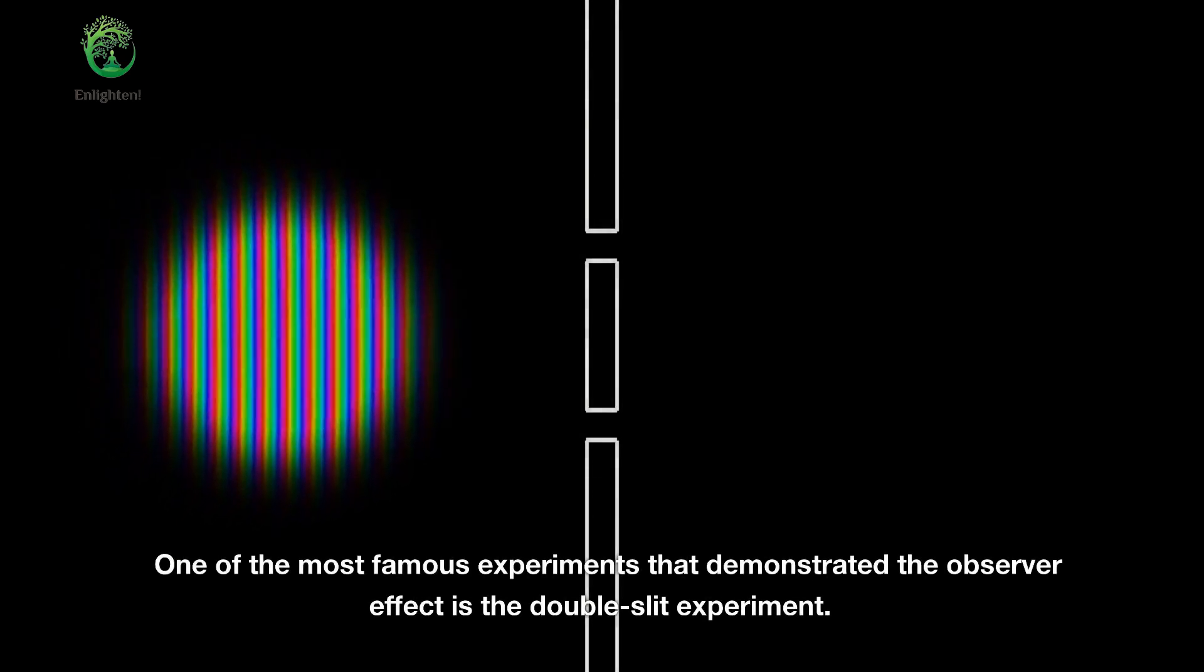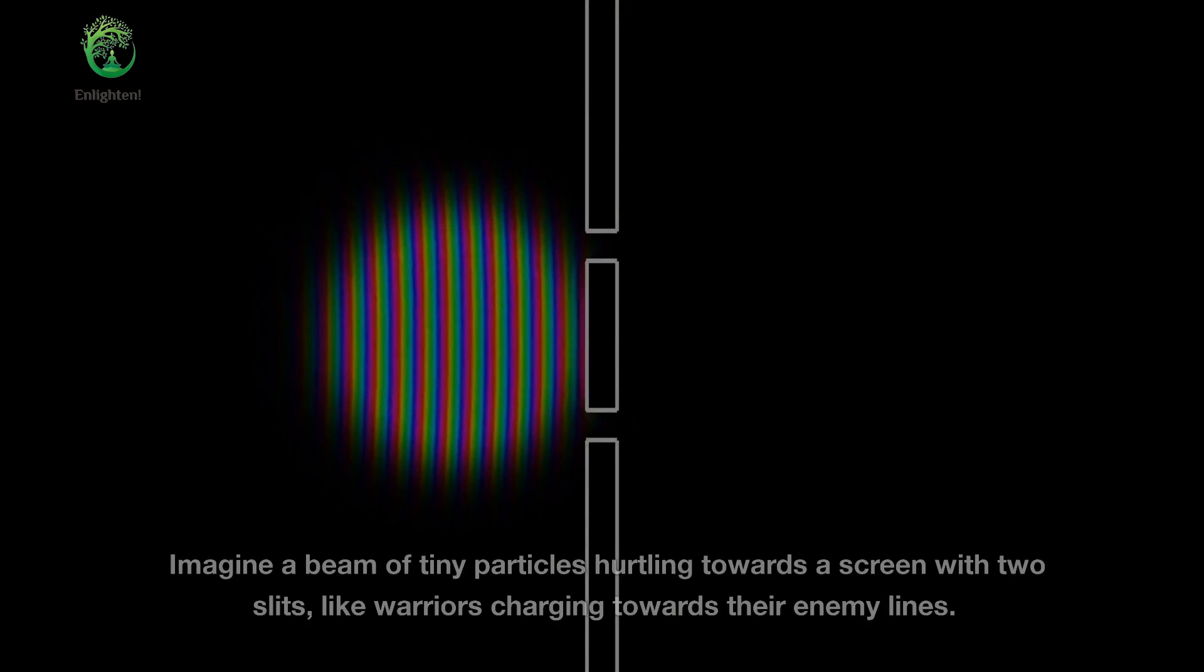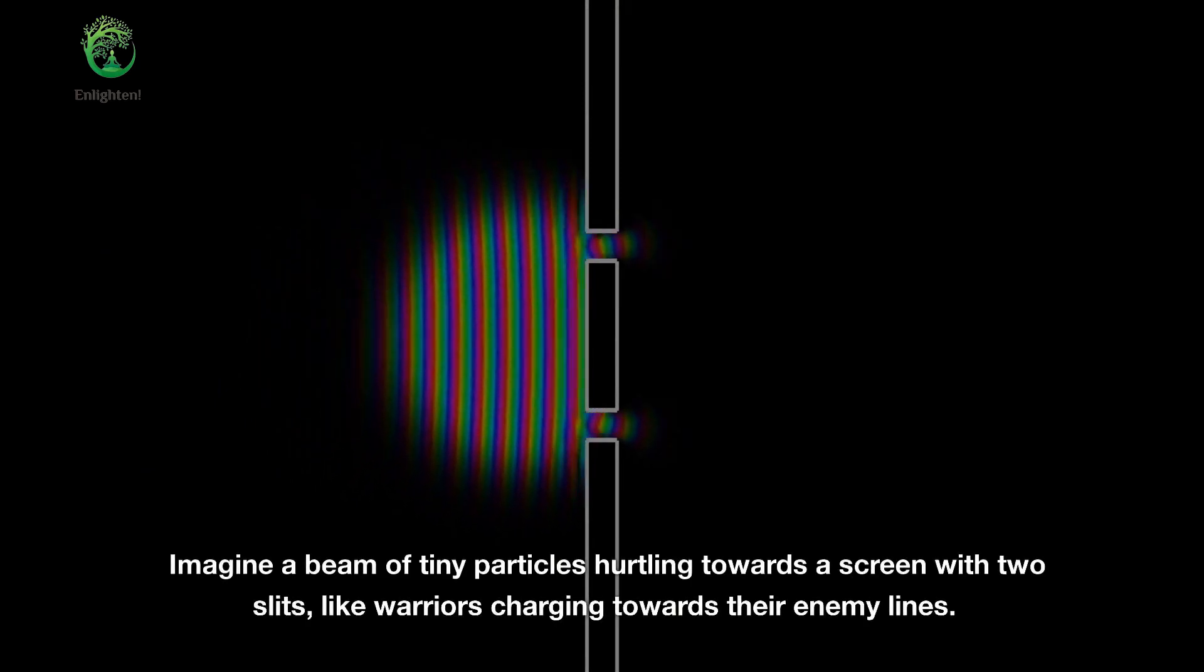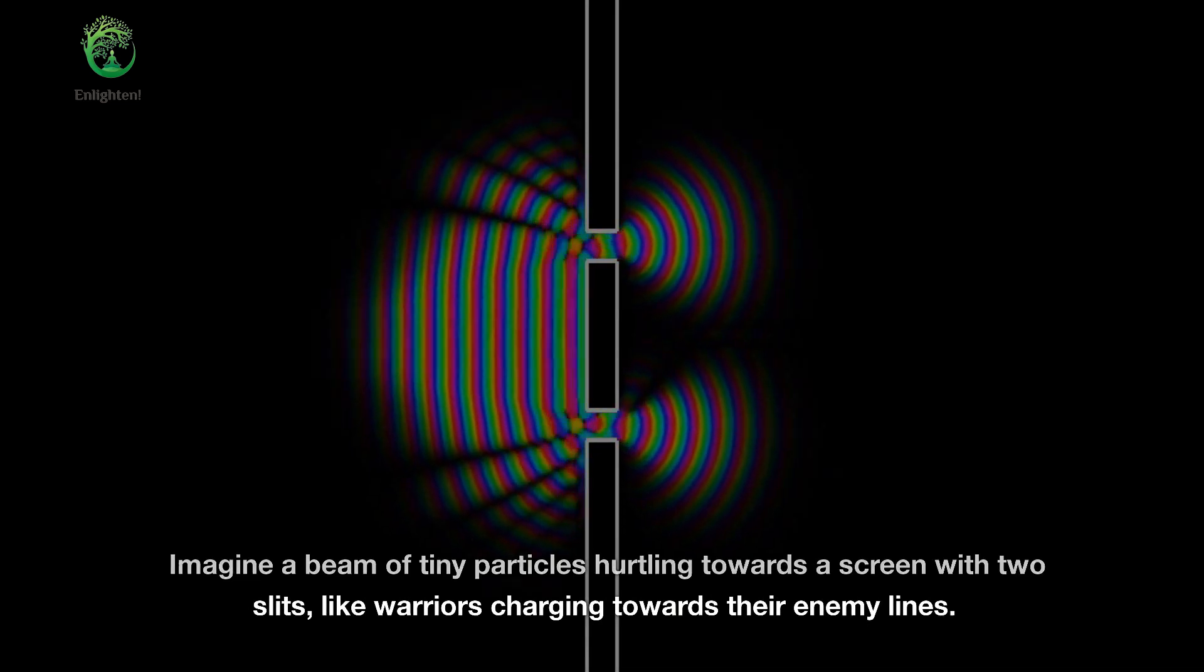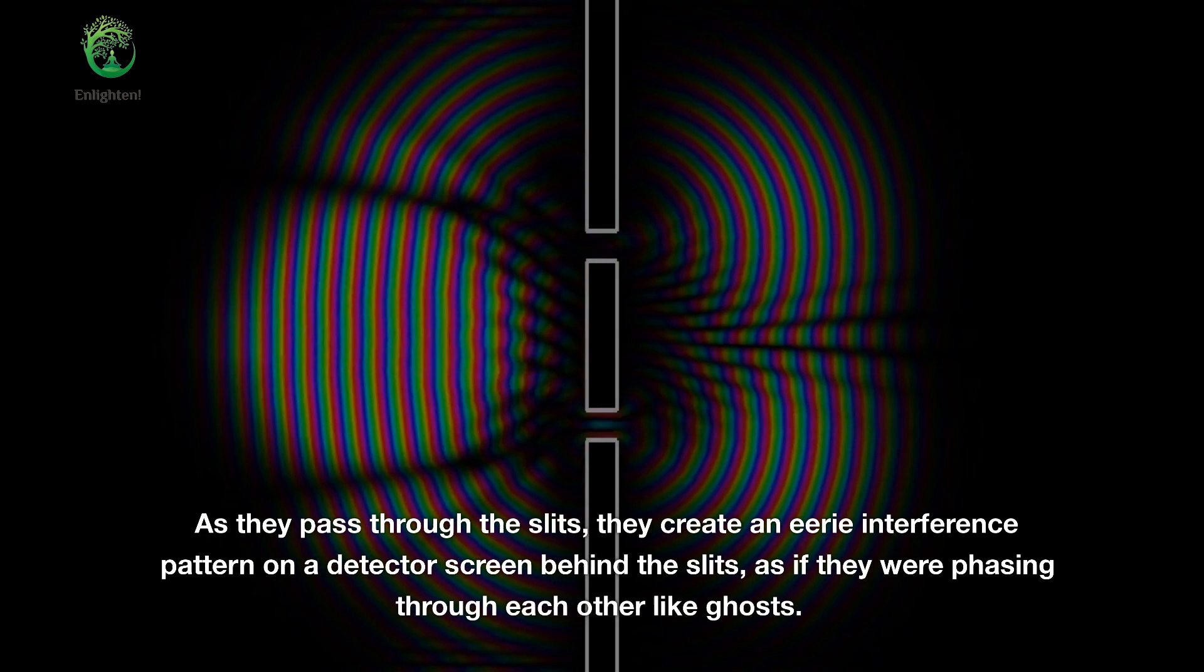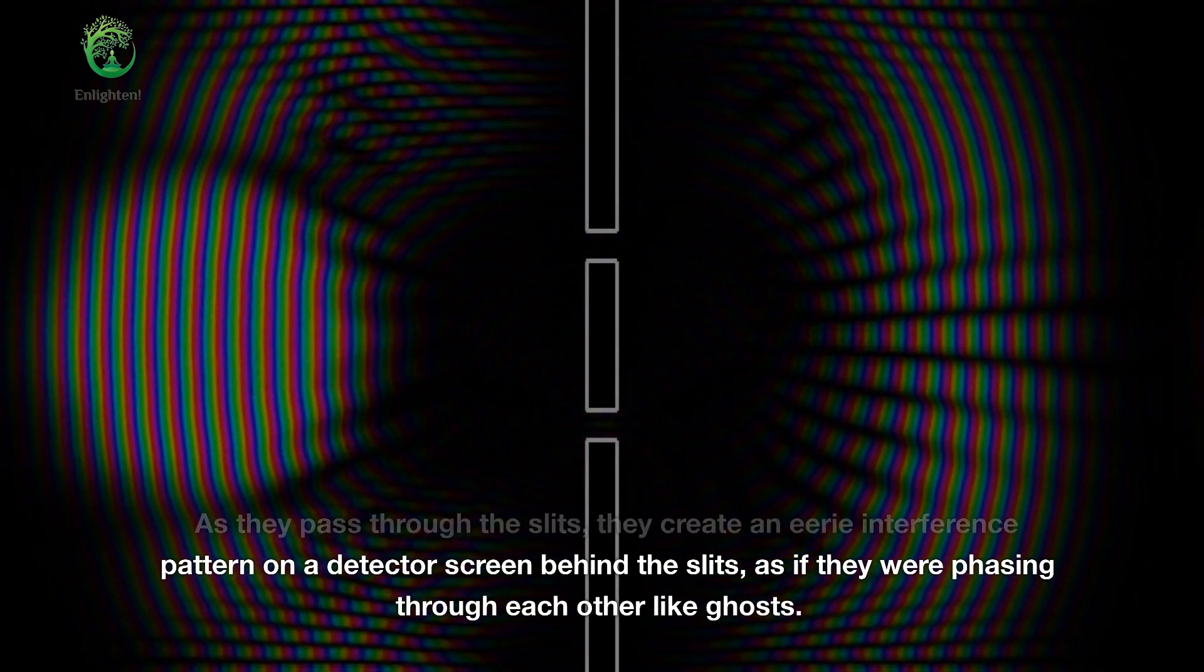One of the most famous experiments that demonstrated the observer effect is the double-slit experiment. Imagine a beam of tiny particles hurtling towards a screen with two slits, like warriors charging towards their enemy lines. As they pass through the slits, they create an eerie interference pattern on a detector screen behind the slits, as if they were phasing through each other like ghosts.